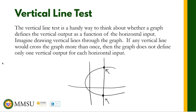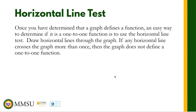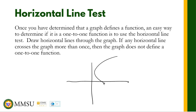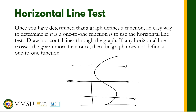In addition to the vertical line test, we also have the horizontal line test. The horizontal line test determines if the function is one-to-one or not. It works just like the vertical line test — if a horizontal line passes through the graph and intersects it at only one point, then the function is one-to-one; otherwise it is not one-to-one.